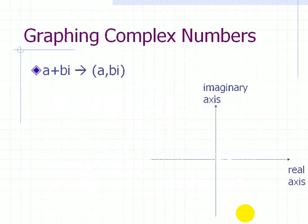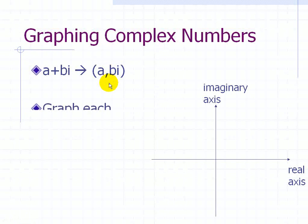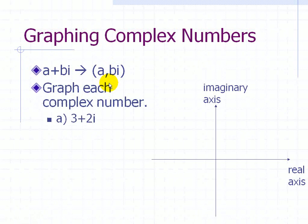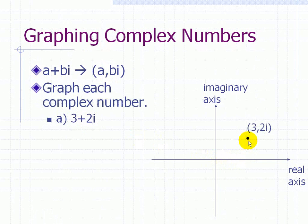Let's take a look at graphing complex numbers. We're given a + bi, which can also be written as (a, bi), where a represents the real component and b represents the imaginary component. Let's graph the following complex numbers. Here we have 3 + 2i — we count 1, 2, 3 on the real axis and 2i on the imaginary axis, so this is (3, 2i) found in this complex plane.